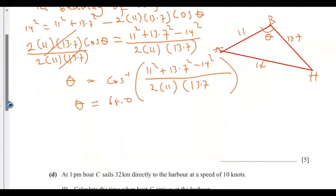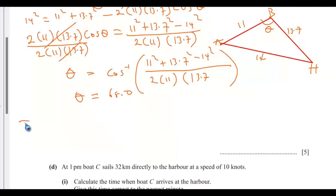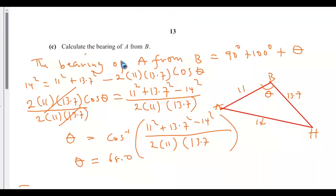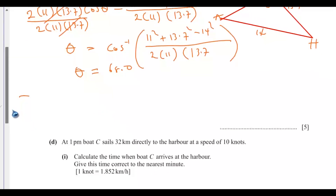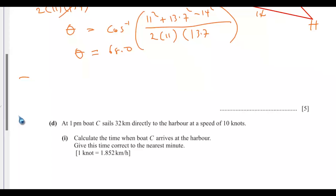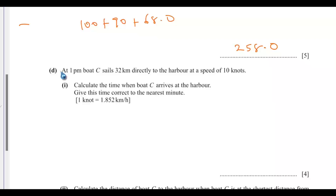Now I can calculate the bearing of A from B. It will be 90 plus 100 plus 68.0, which gives 258.0 degrees to one decimal place. That is the bearing of A from B.